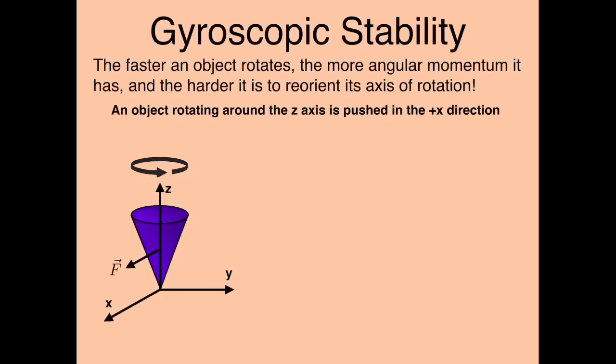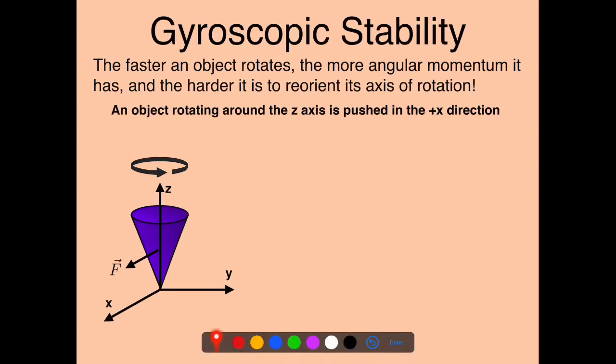The last topic to cover is gyroscopic stability. The concept is that if an object is spinning, it is more stable because of that spin. More specifically, the faster an object is rotating, the more angular momentum it has, and therefore the harder it will be to reorient the axis of rotation. The faster something is rotating, the harder it is to tip it over — so it's more stable.